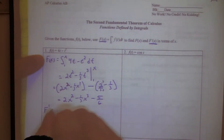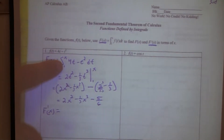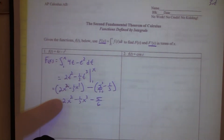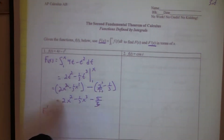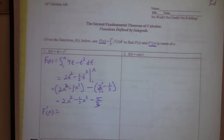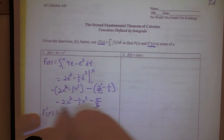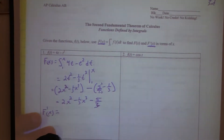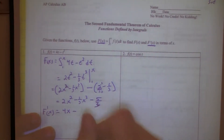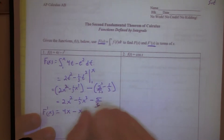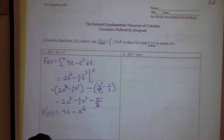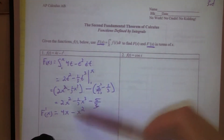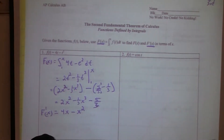Now they want the derivative of that function — which is the same as getting the derivative of that integral. Switching to derivatives: the derivative of 2x squared minus one-third x cubed minus 5 thirds gives us 4x minus x squared. Does that look similar to what we started with? The only thing that changed is the t's became x's.